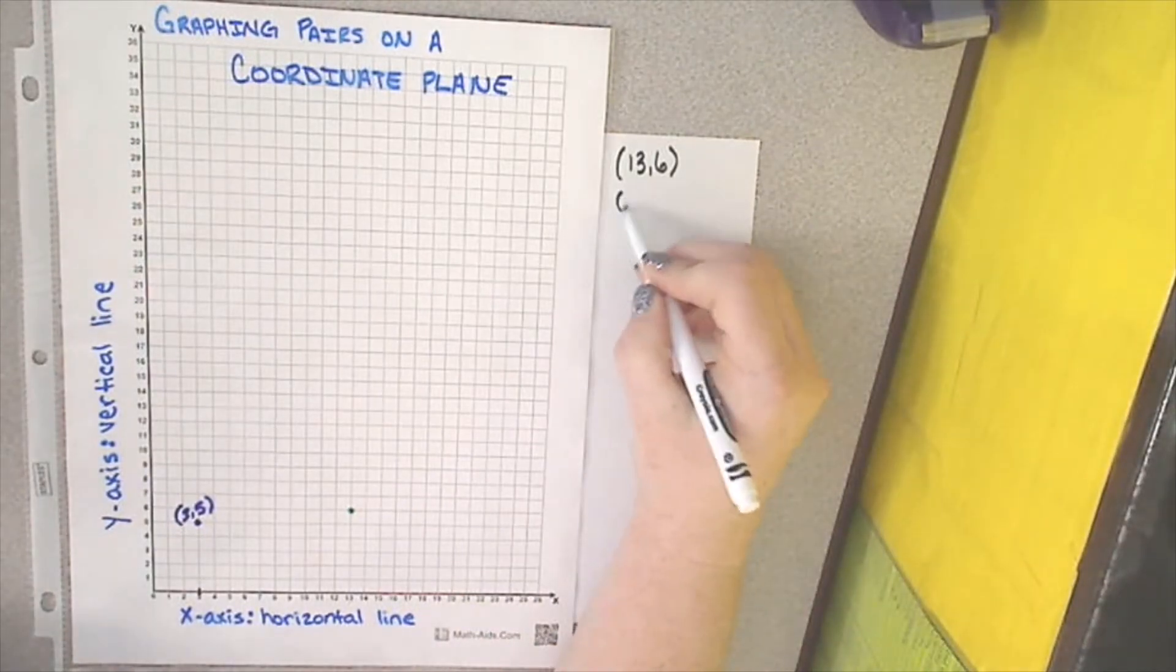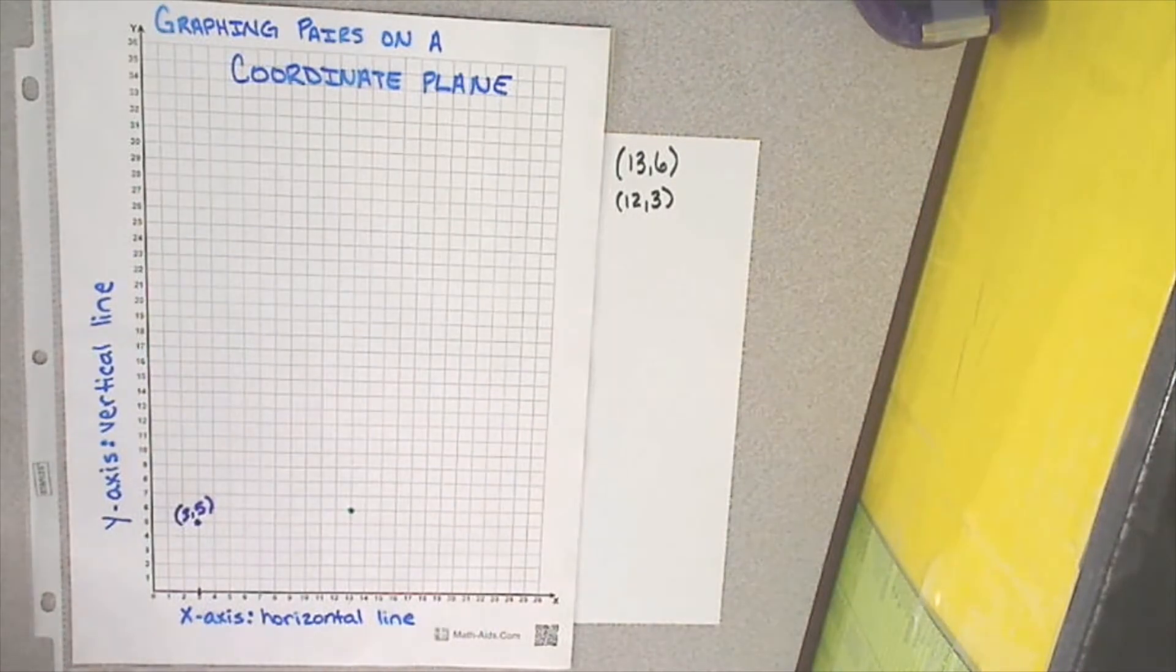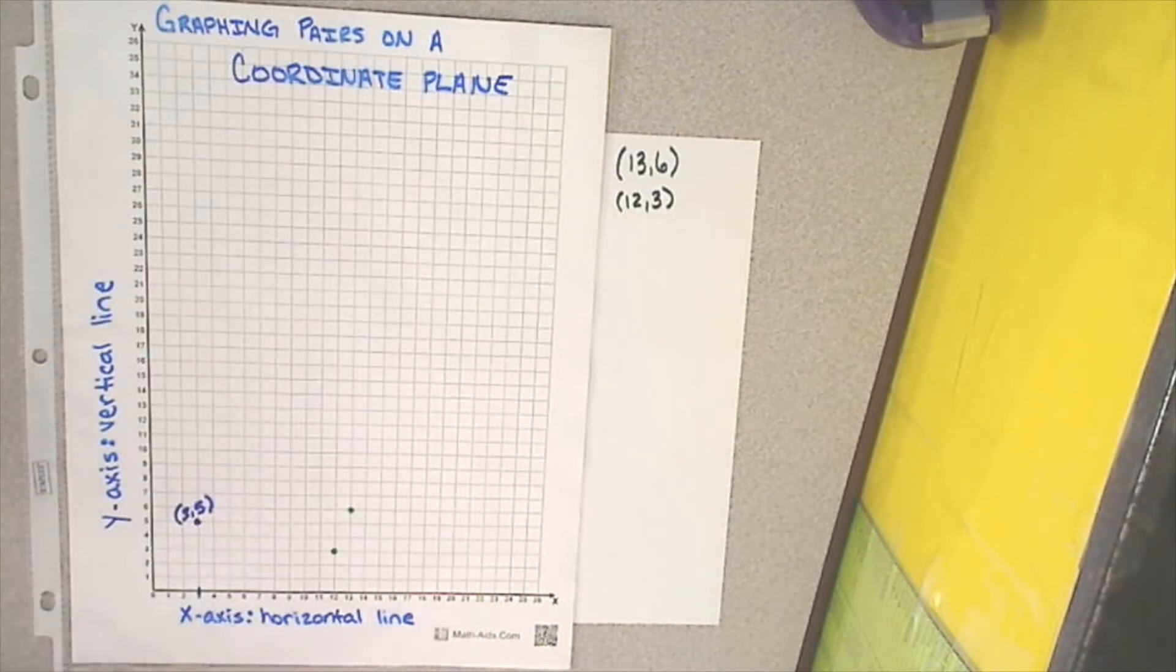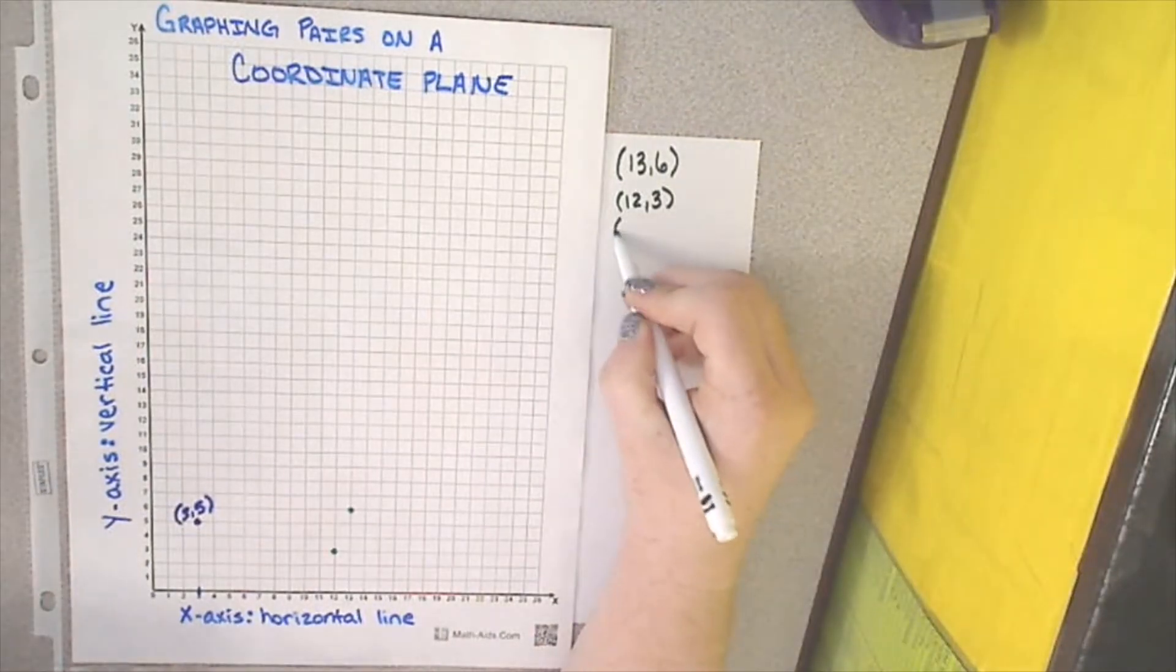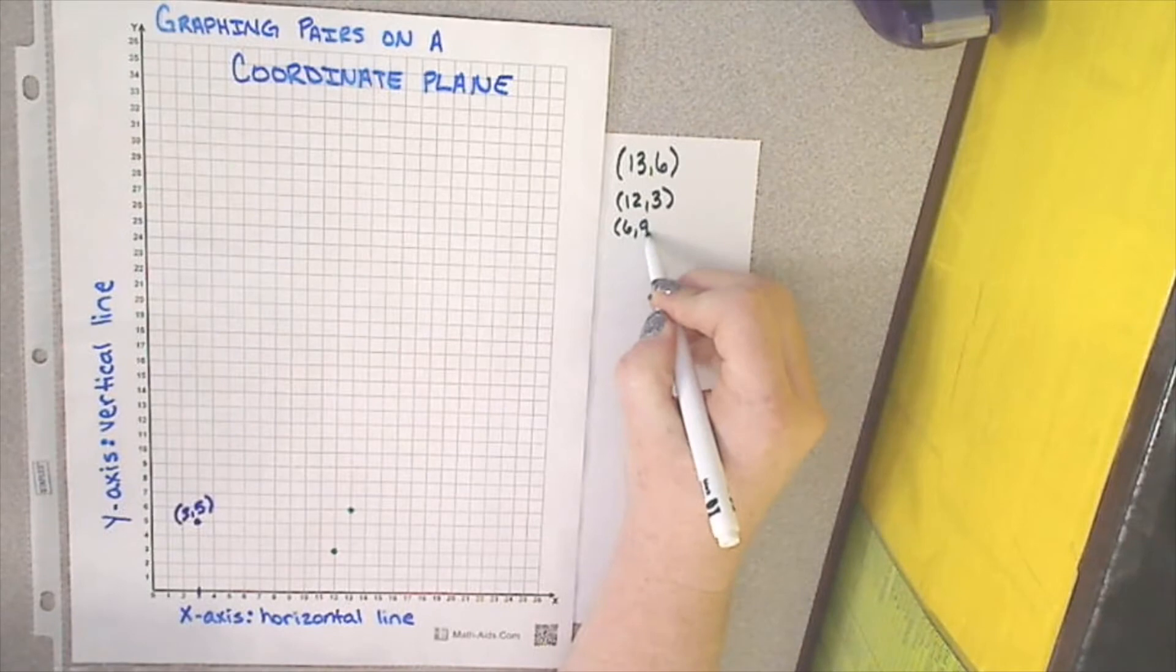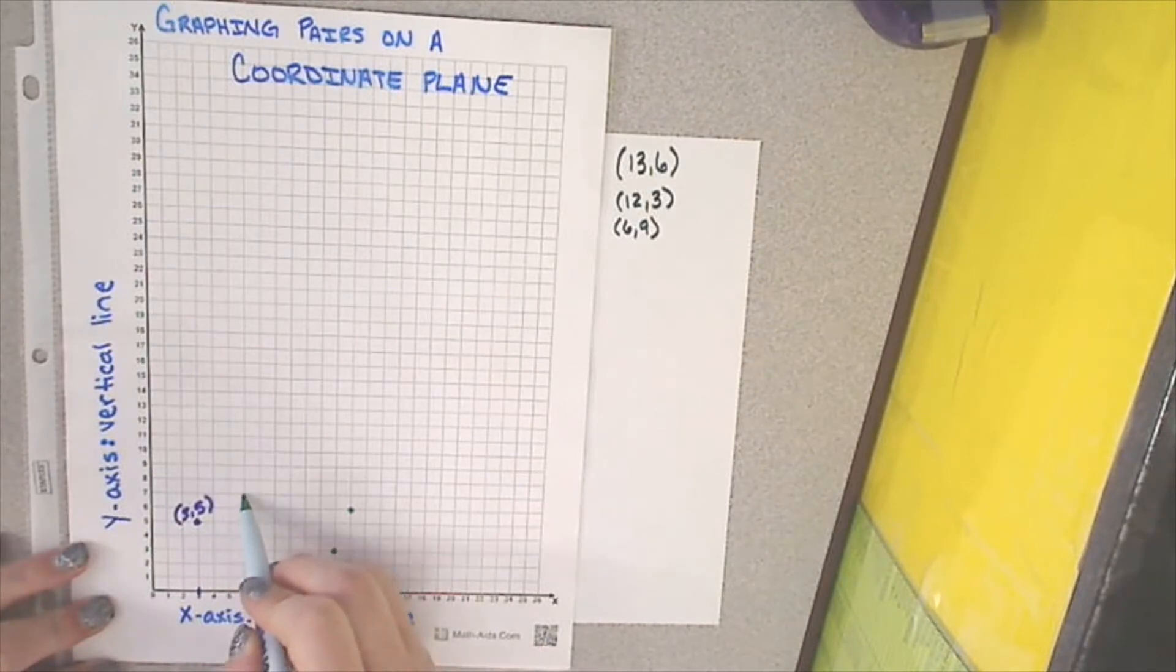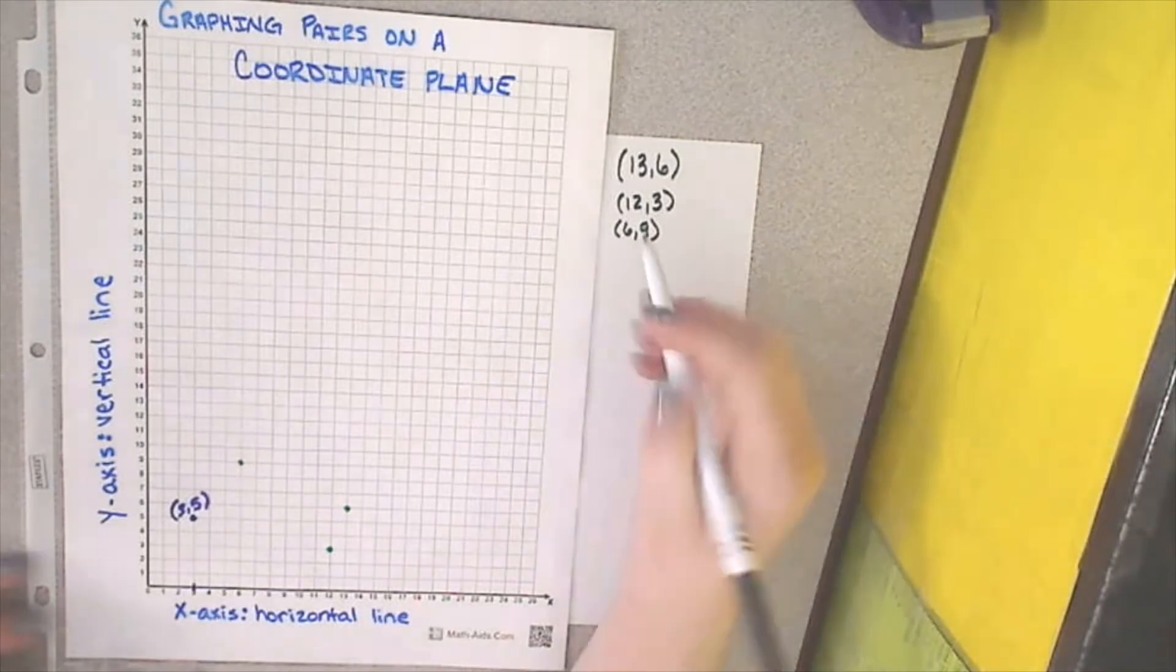Now, we're going to find 12 comma 3. X-axis come to the 12 and go up 1, 2, 3. And if you'll notice, that's where 12 and 3 intersect. Our next ordered pair is 6 comma 9. Come to 6, and find where it intersects at 9.